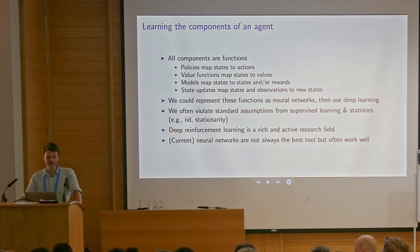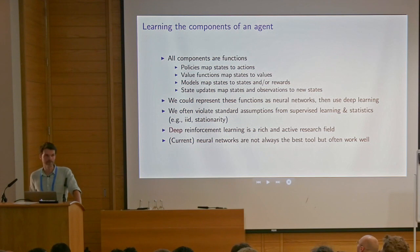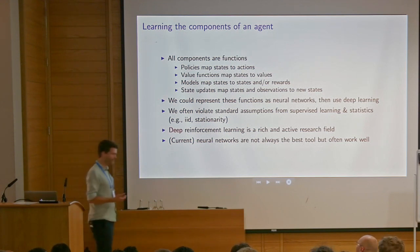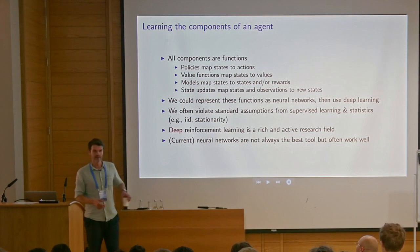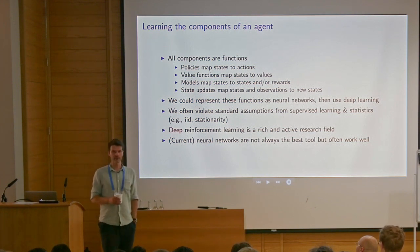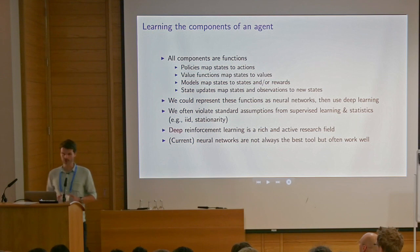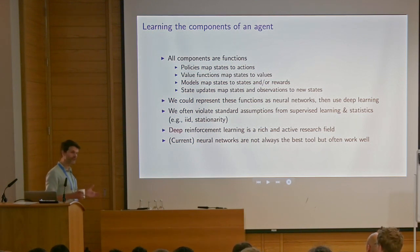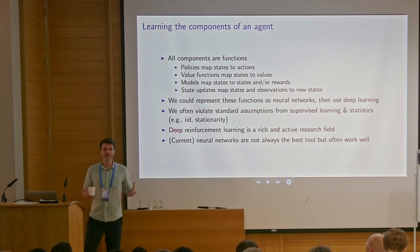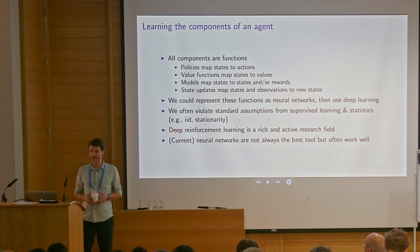However, we often violate standard assumptions for supervised learning and statistics, and it's good to be aware of that. For instance, if you use some methods to do your value prediction, you could use a standard regression method. But many regression algorithms assume that the inputs and output labels are IID — independent and identically distributed. We also typically assume that the world is stationary when we do supervised learning — basically there's one mapping you're trying to find and it stays the same. In reinforcement learning we typically violate these.